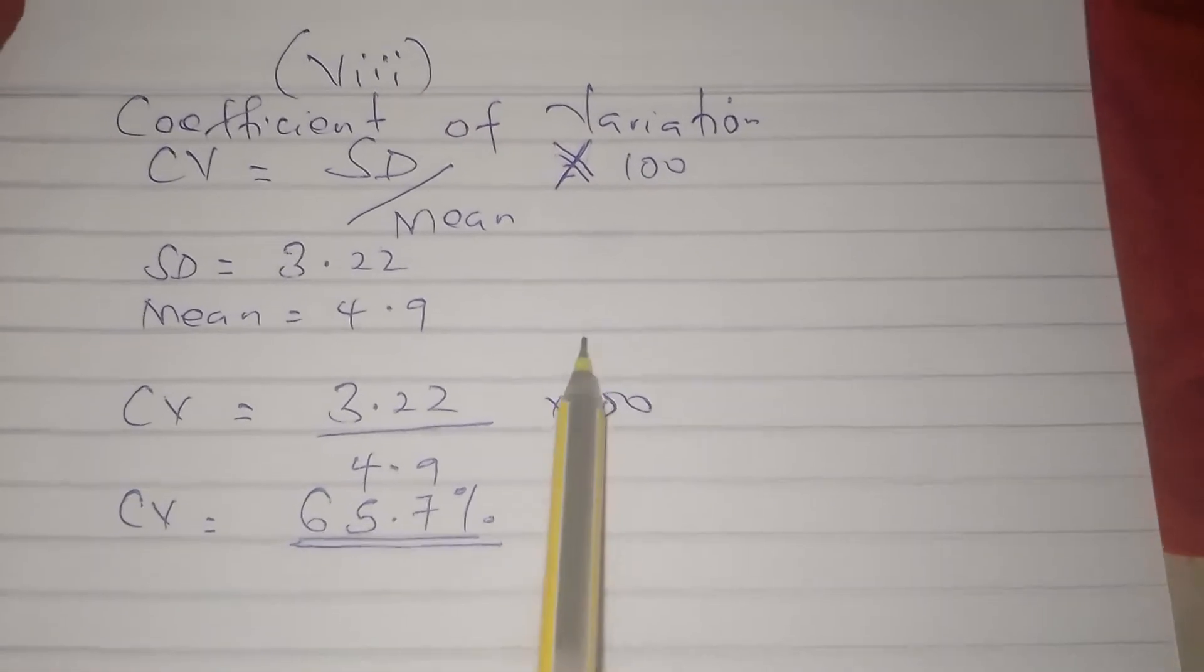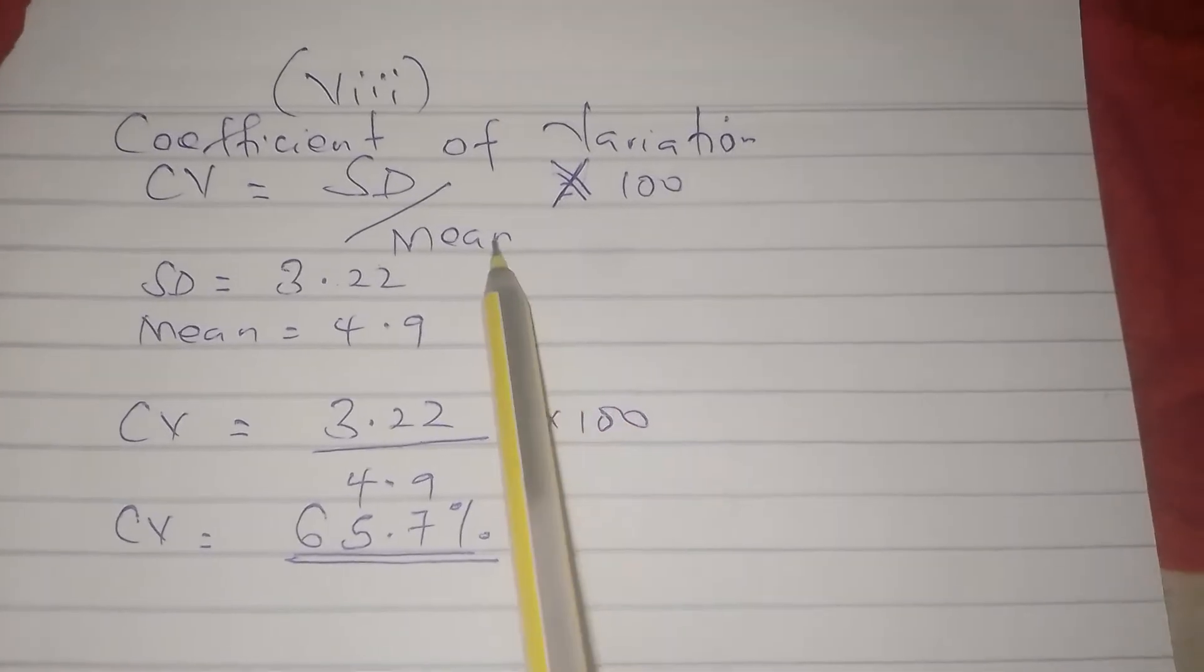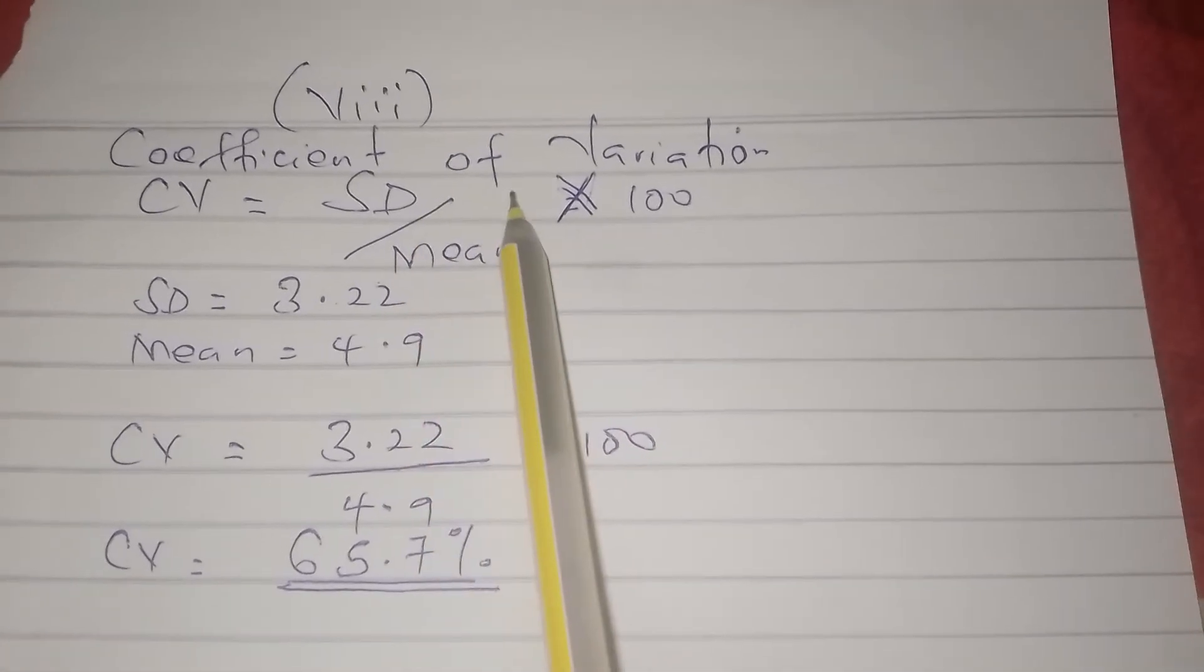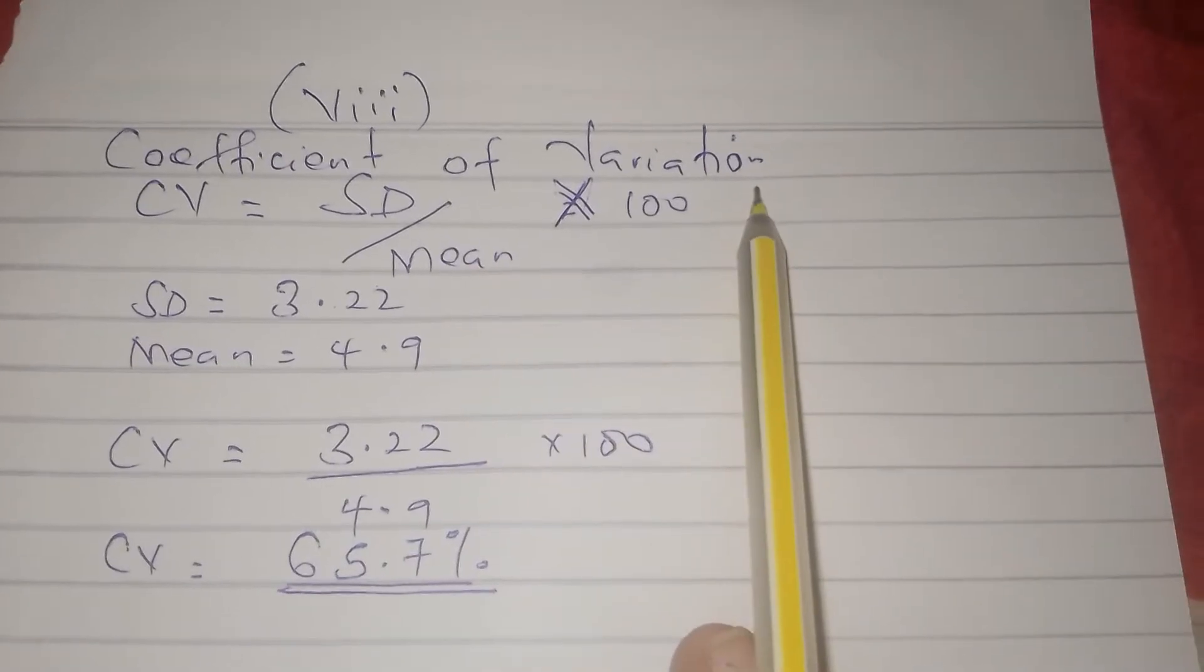Coefficient of variation. The formula for calculating coefficient of variation is standard deviation divided by mean times 100.